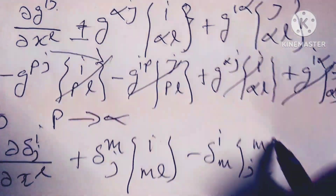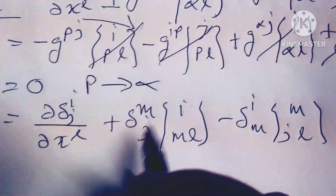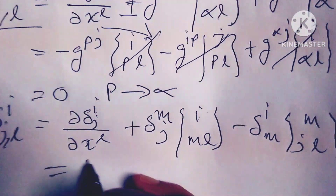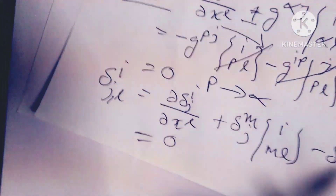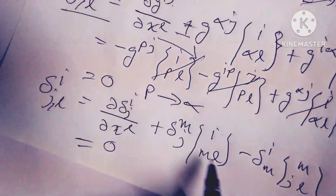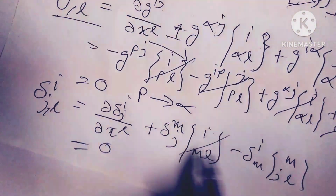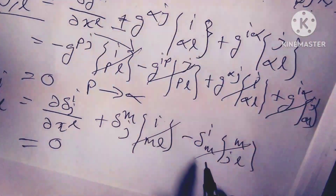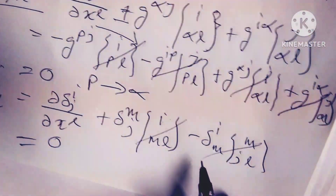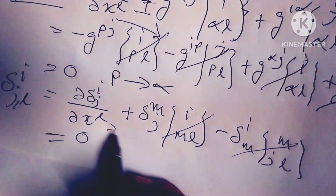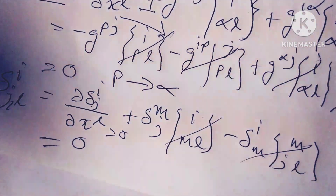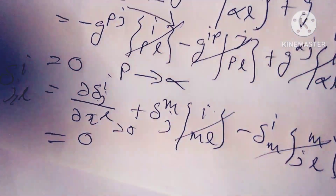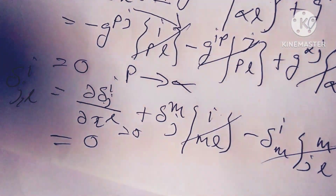...applying the Christoffel symbol identity, this value equals zero because the terms cut each other. So delta^i_{j,l} equals zero as well. I hope that is clear.